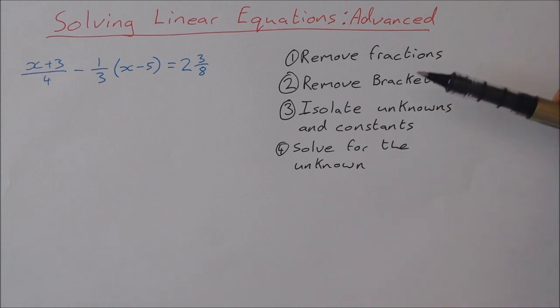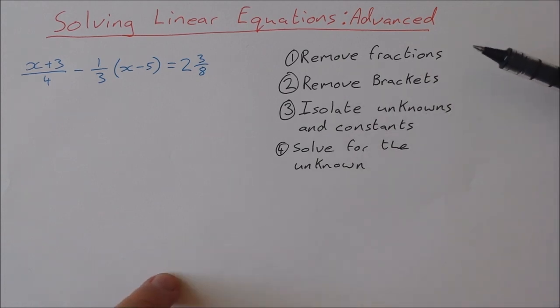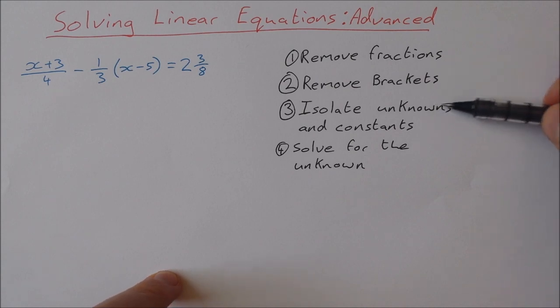The order that I'm going to do things in and that I like to do linear equations is I like to get rid of any fractions that I can first of all, then I deal with the brackets, then I go and isolate unknowns and constants on either side of the equal sign, and then I solve for the unknown.